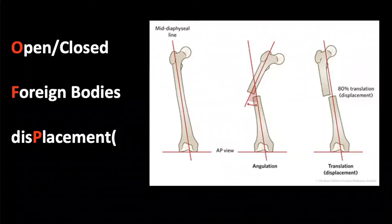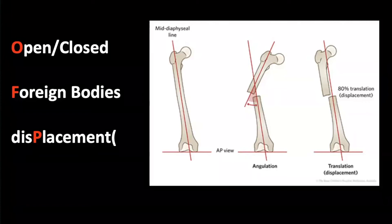The image on the right shows some of the principles about angulation and displacement. Displacement essentially is if you draw a straight line up the bone and the fracture has just moved — displaced to either the left or the right, or dorsally or volarly.